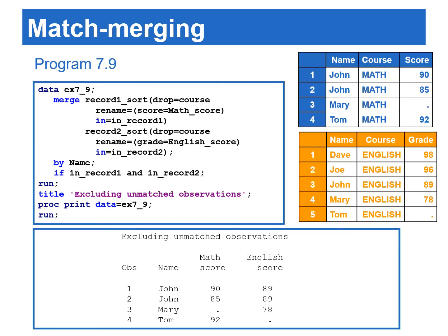Program 7.9 excludes the unmatched observations that were read from record one sort and record two sort. Two temporary variables, in_record_one and in_record_two, are created by using the in equals data set option. In_record_one equaling one indicates the current observation in the PDV is read from the record one sort data set. Similarly, in_record_two equaling one indicates the current observation is read from record two sort. A subsetting if statement is used to include observations that are read from both record one sort and record two sort data sets.